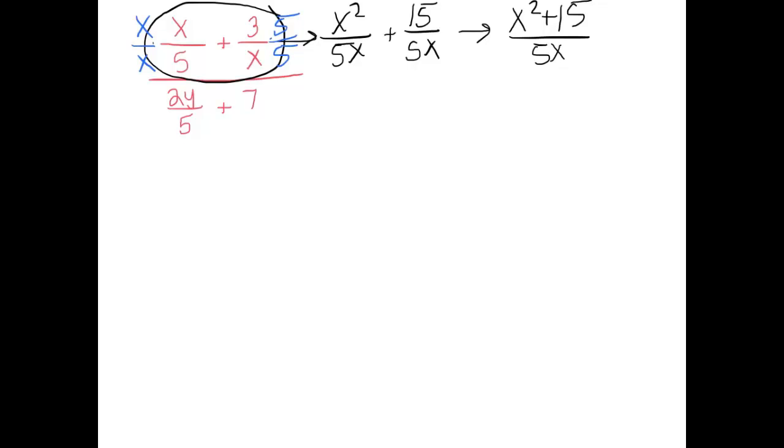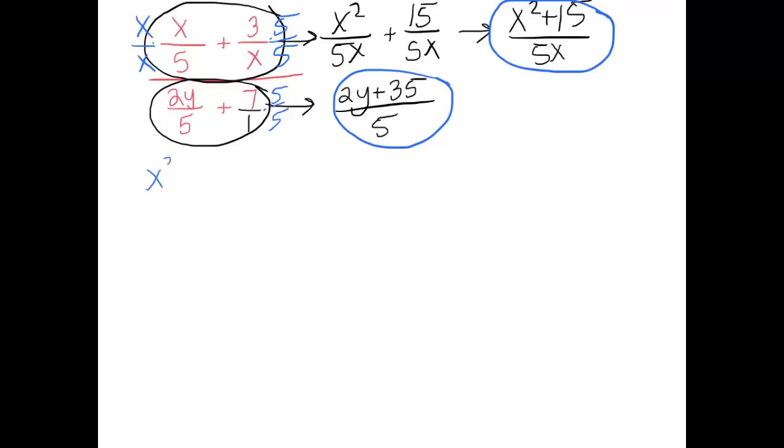So, I took care of that whole numerator from the original problem. Let's go back to the beginning, that pink giant complex fraction. Now, let's only focus on the denominator. 2y over 5 plus 7. I'd like to add those together. Of course, that's really a 7 over 1. The common denominator is 5. So, let's multiply that second fraction by 5 over 5. And, we get 2y plus 35 all over 5. So, we have our new numerator is all the way over here. Our new denominator is all the way over here. So, let me actually just rewrite that. x squared plus 15 over 5x. That was our numerator. And, our denominator is 2y plus 35 all over 5.